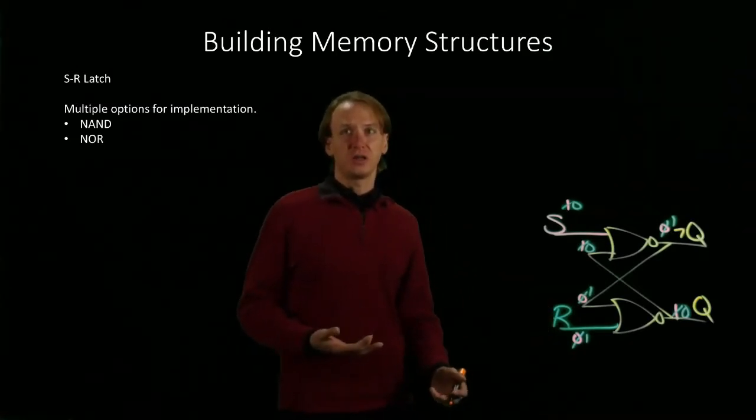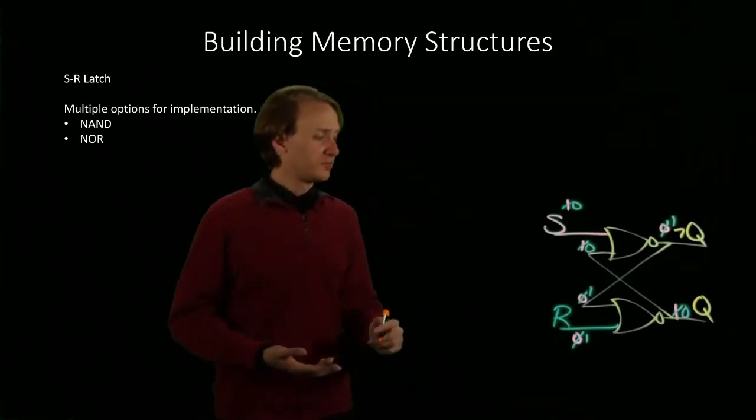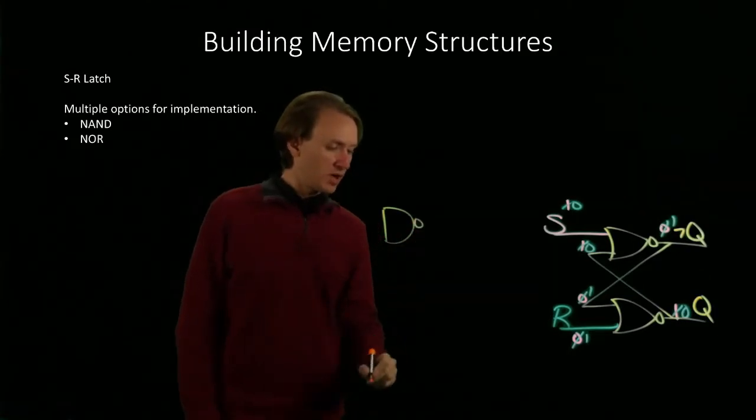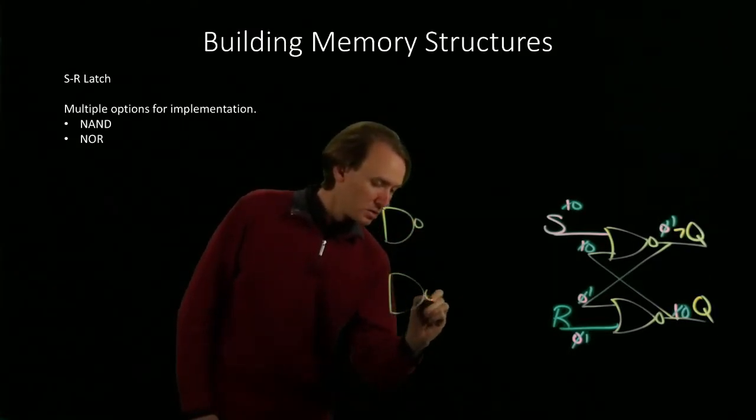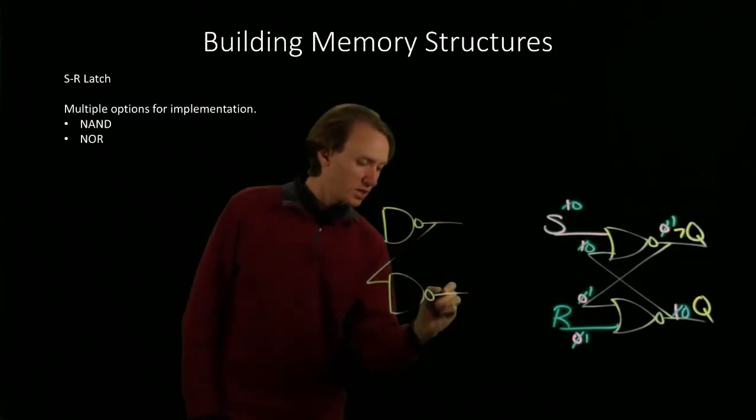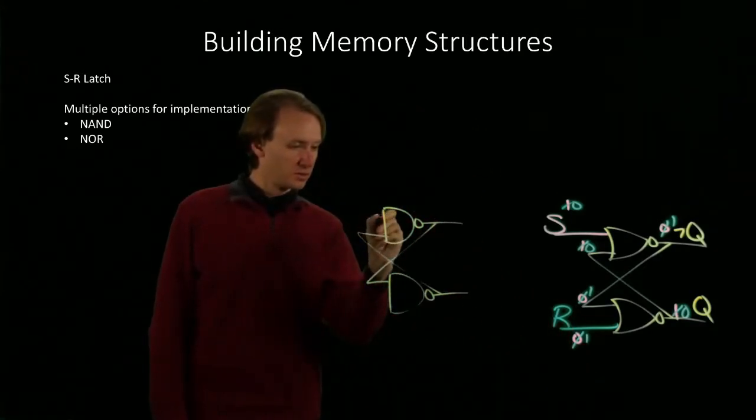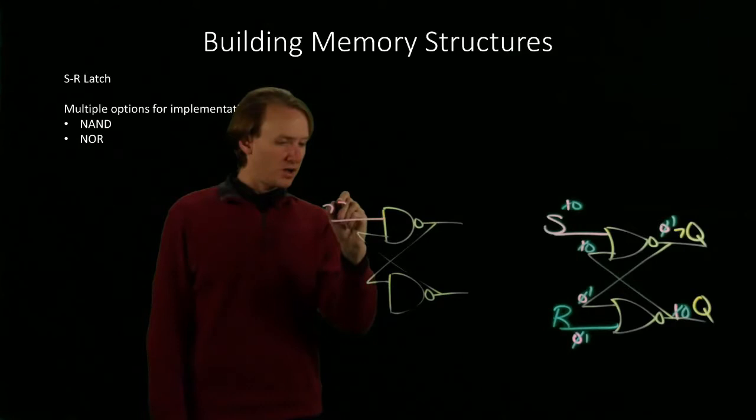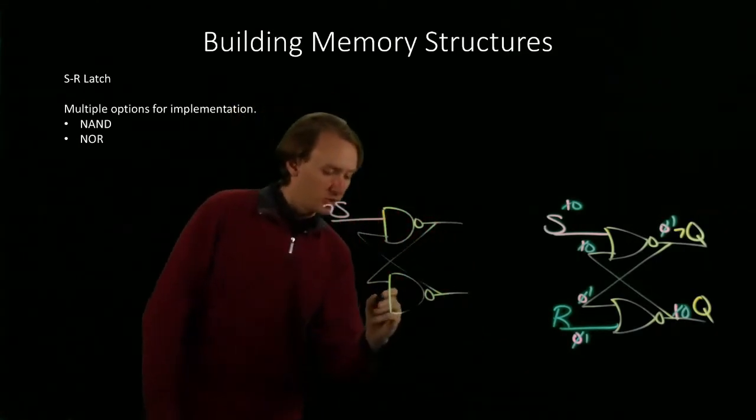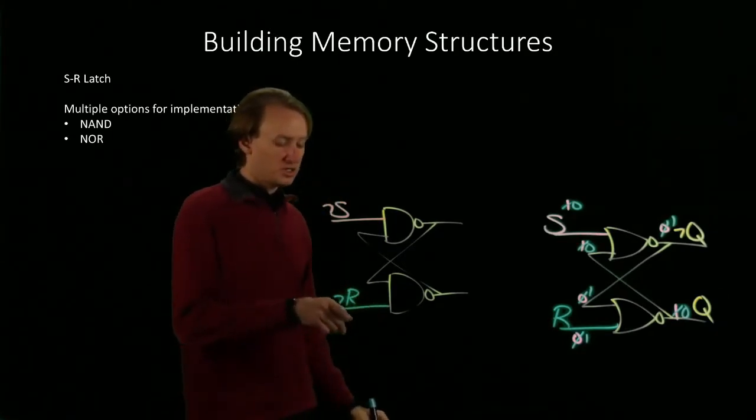We can also do this by using NAND gates, and that actually gives us something a little different. So we'll start by having two NAND gates. And the construction will be pretty similar. They'll again be cross-coupled. But this time I will have the negation of S as one of my inputs and the negation of reset as the other input.